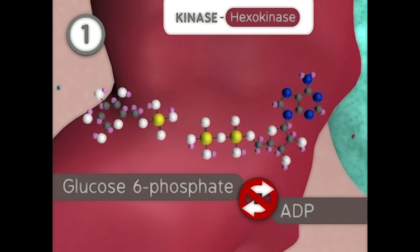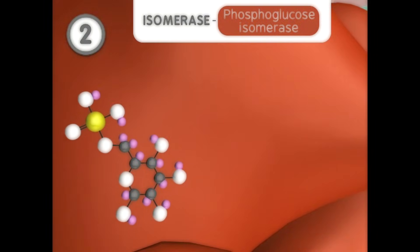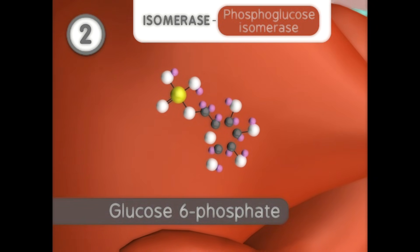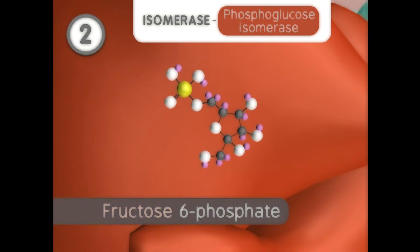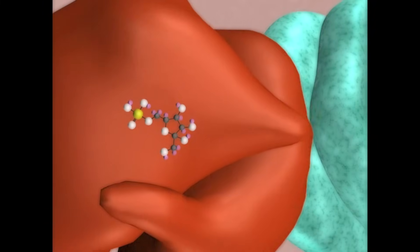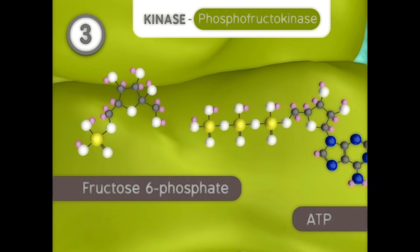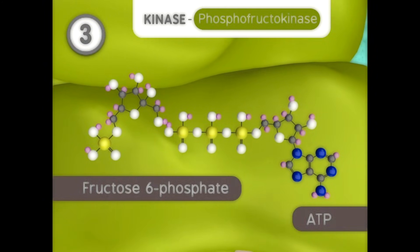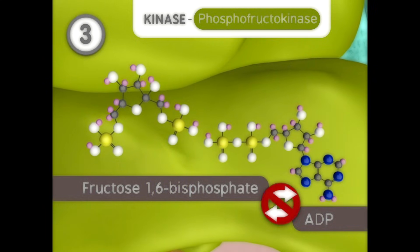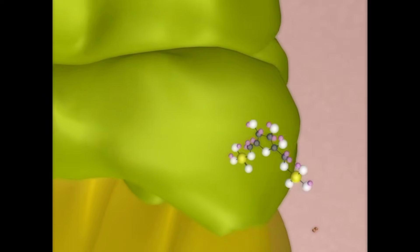Next, an isomerase reaction converts glucose-6-phosphate into fructose-6-phosphate by rearranging covalent bonds. Another kinase removes a phosphate group from ATP and gives it to fructose-6-phosphate to form fructose-1,6-bisphosphate. This is the second energy consumption step and an irreversible reaction.